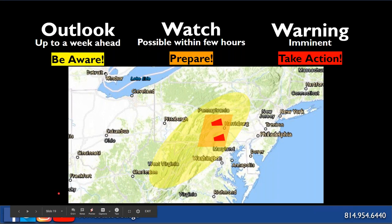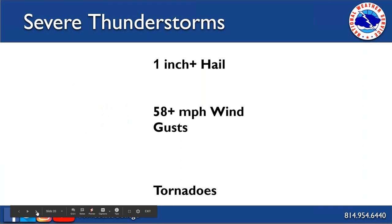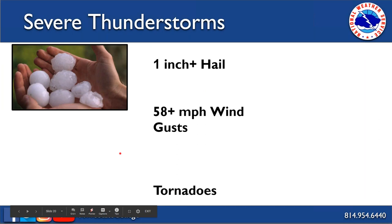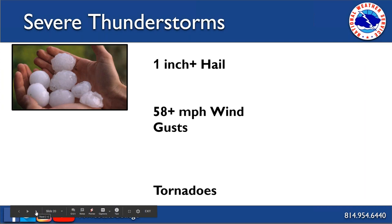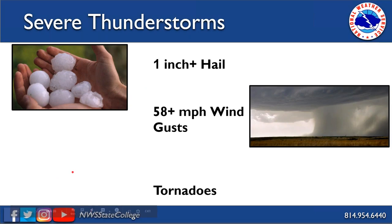Criteria for severe thunderstorms: lightning and rainfall are not criteria for severe thunderstorm warnings — rainfall is handled through flood watches, and while lightning is an implied danger, there are no specific products for it. A severe thunderstorm is defined by either one-inch or greater diameter hail or 58 mph or greater wind gusts. If there's a tornado associated with the storm, it's automatically upgraded to a tornado warning — the three criteria being hail, high winds, or tornadoes.